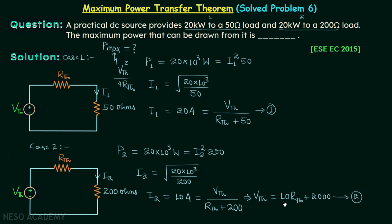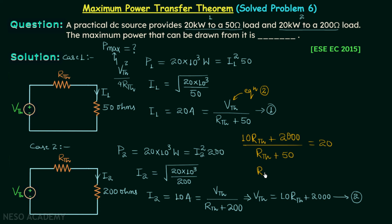Substituting Vth from equation 2 into equation 1 gives 10·Rth plus 2000, divided by Rth plus 50, equal to 20. Solving this gives Rth equal to 100 ohms. Substituting Rth equals 100 into equation 2 gives Vth equal to 3000 volts.